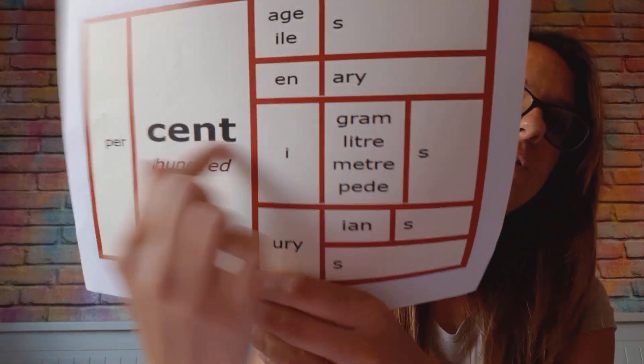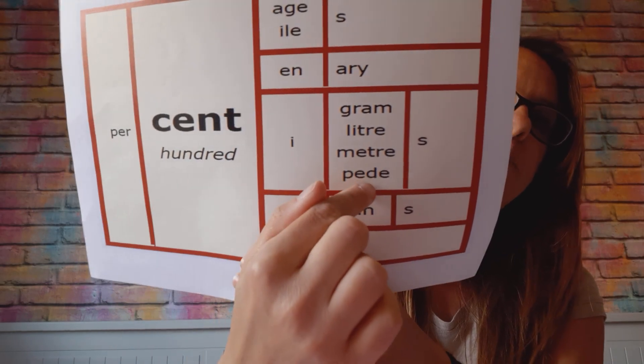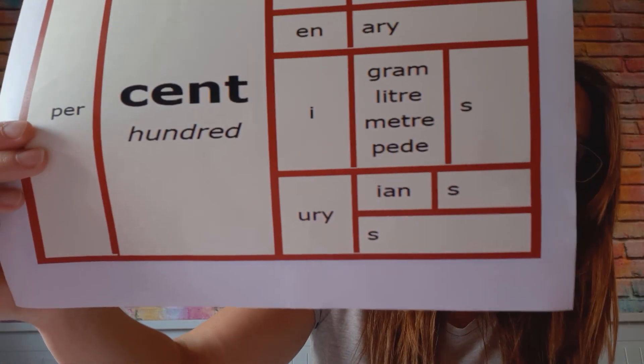I want to go back to centipede, because I forgot that one. Ped relates to feet — toes and feet. So centipede means a hundred feet. Centipedes don't actually have a hundred feet, but that's obviously originally where it comes from — something to do with all those legs and feet.